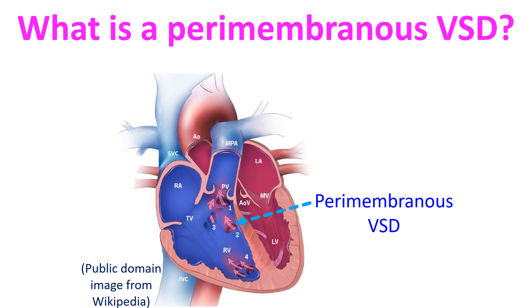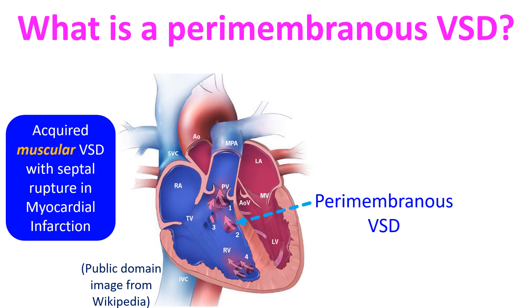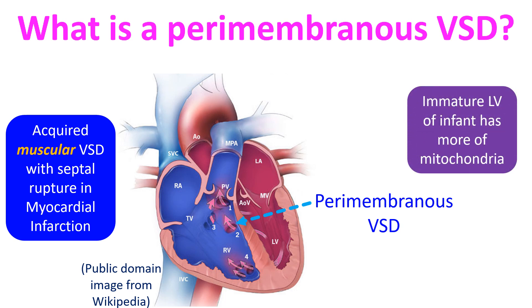VSD usually occurs as a congenital defect, though it can rarely occur in adults after a myocardial infarction due to rupture of the ventricular septum. If the VSD is large, high pulmonary blood flow increases the amount of blood returning to the left atrium and left ventricle through the pulmonary veins. This volume overloading of the left ventricle can lead to heart failure, as the immature left ventricle of the infant has more mitochondria than contractile elements.